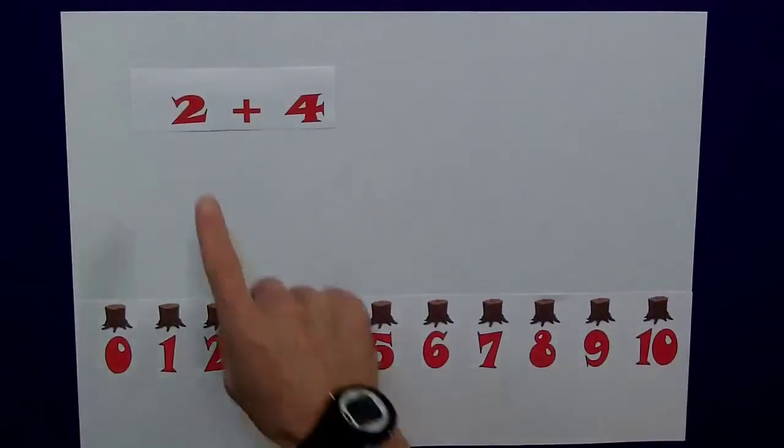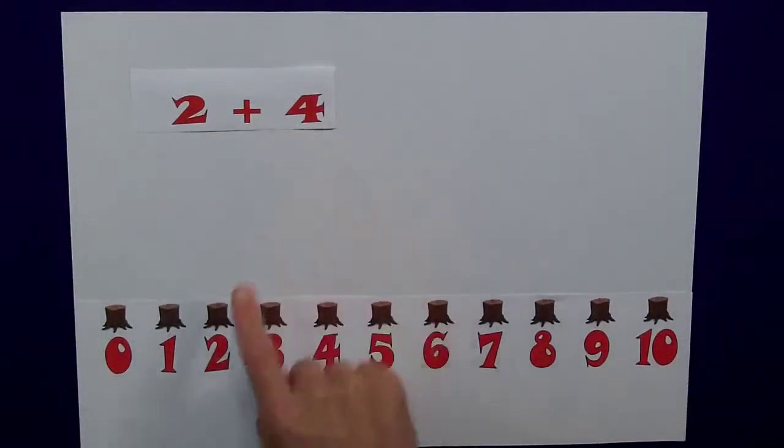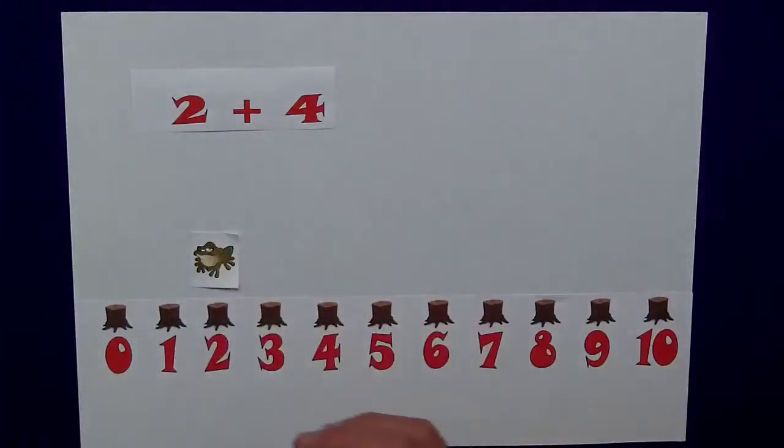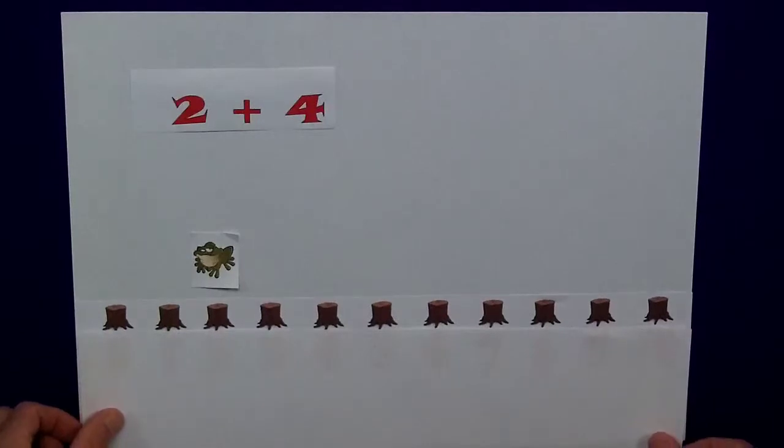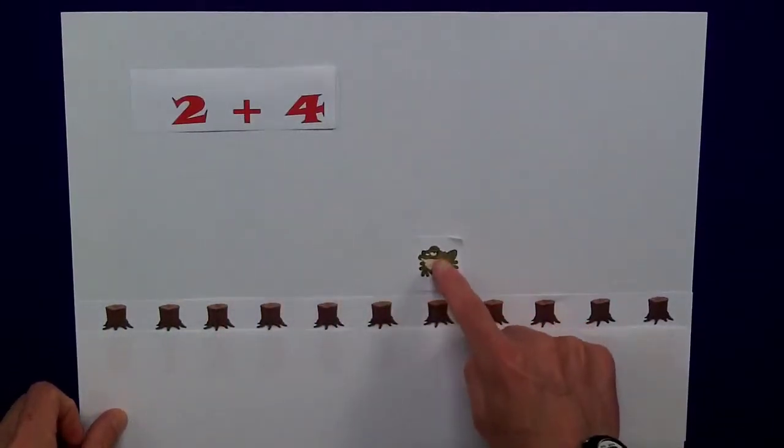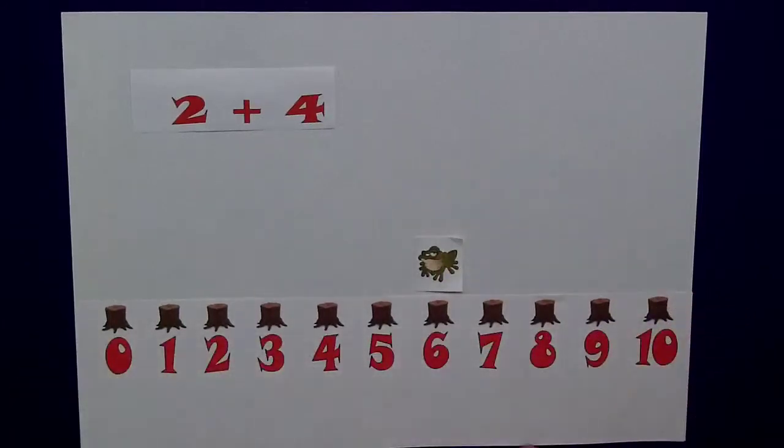See how you get on with this one, 2, add 4, 2 is our starting point, so there's Freddie, let's cover up the numbers, remembering our jump is 4. 1, 2, 3, 4, and we finish at 6.